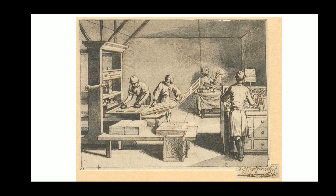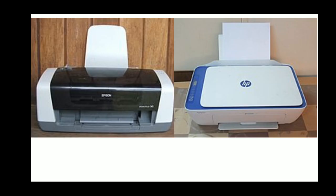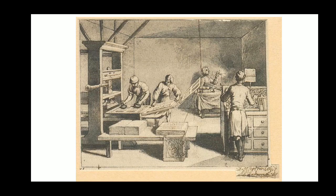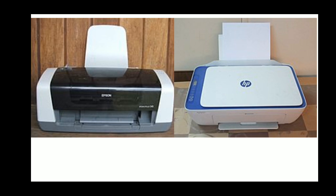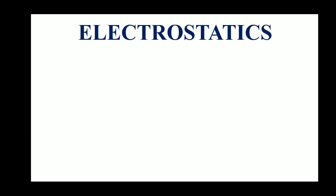Can you see this earlier picture? Somebody is working — can anybody guess? Are they ironing or writing? Some four people are working. Yes, this is the printing process — that was only the old version. People used to do printing work by this method, and today printing has come to our table in a very comfortable way. All this is possible because of electrostatics, which is only what we are going to study.